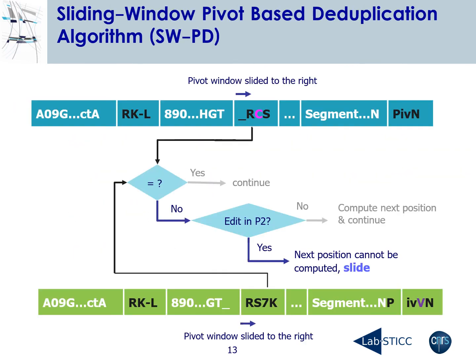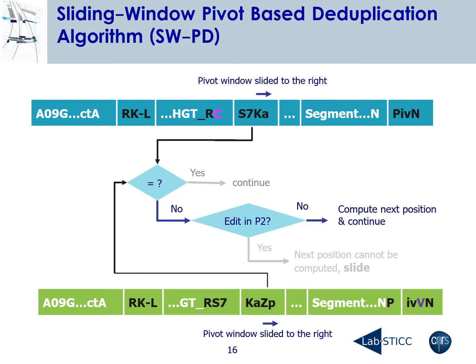In this paper, we propose a new algorithm called the Sliding Window Pivot-Based Deduplication algorithm, or SWPD. This algorithm allows us to compute the position of the next pivot even if there is an alteration on the previous one. Its principle is that when a deletion appears on the pivot — such as the deletion of C in this example — instead of stopping, the window pivot slides to the right until no deletion appears in the pivot. Then the position of the next pivot can be calculated and the algorithm continues its execution to deduplicate data.